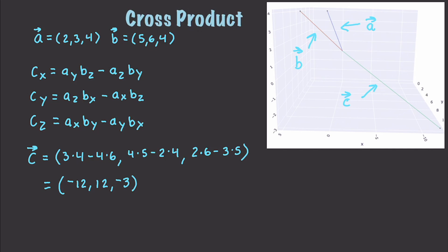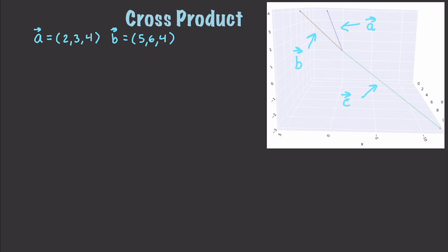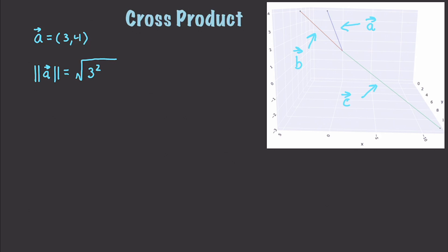Something important before we move on to matrices: a unit vector is going to have a magnitude of 1. So let's say we have vector A with values 3 and 4. If I want to get the magnitude of this, it is the square root of three squared plus four squared, which works out to nine plus sixteen, which equals the square root of 25, which is equal to 5. To find the unit vector, you divide both parts of the vector by the magnitude.